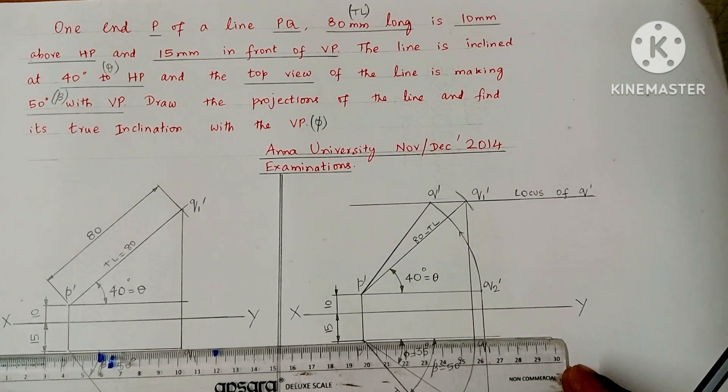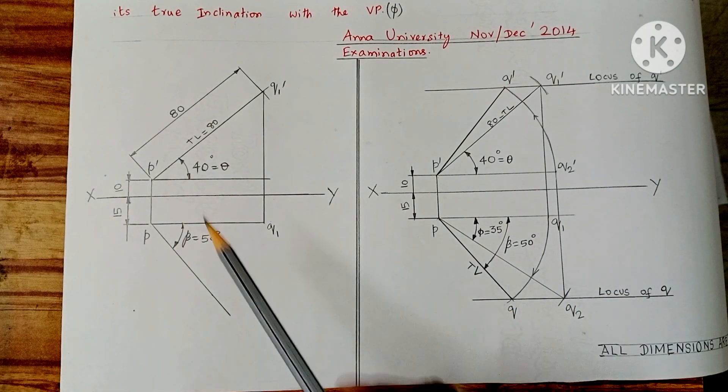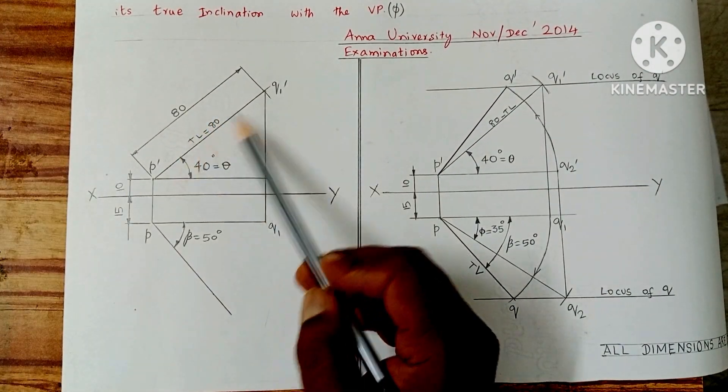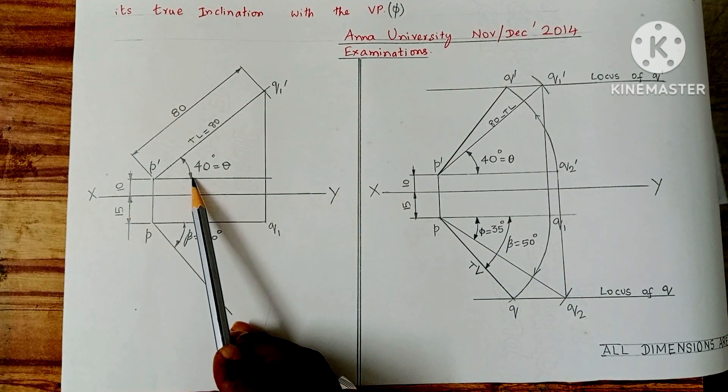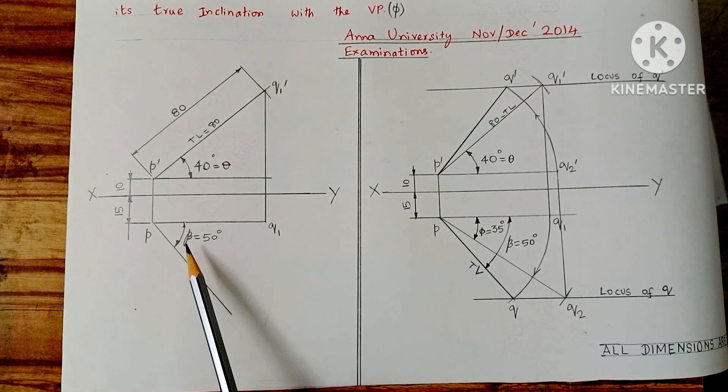Whatever data is given in the question is converted into a diagram in step one. True length is marked 80 mm, and theta is the true inclination with HP above the XY line, and beta is the top view inclination given as 50 degrees.